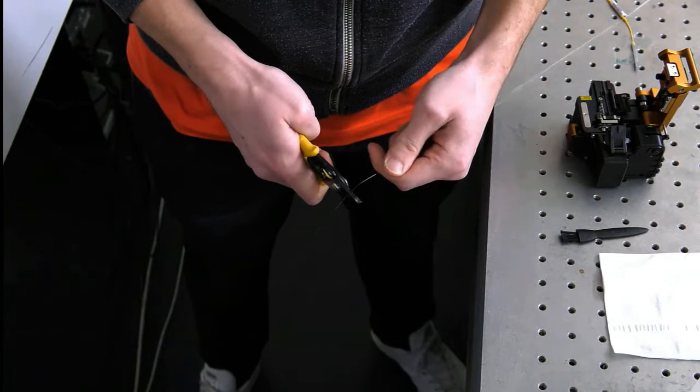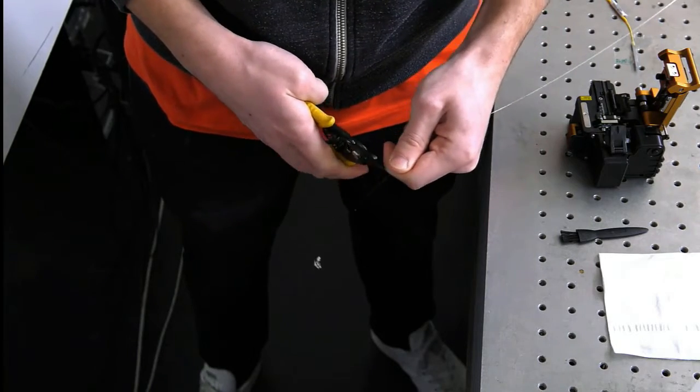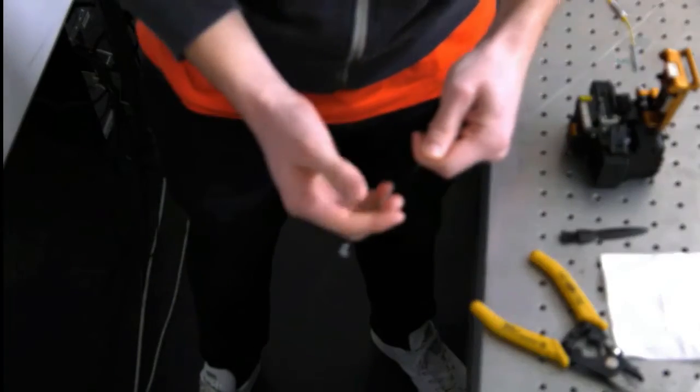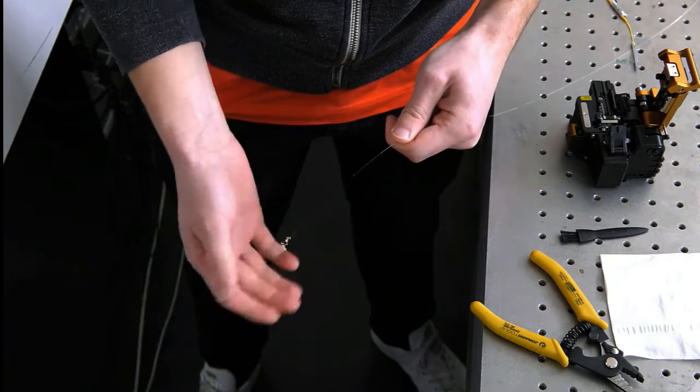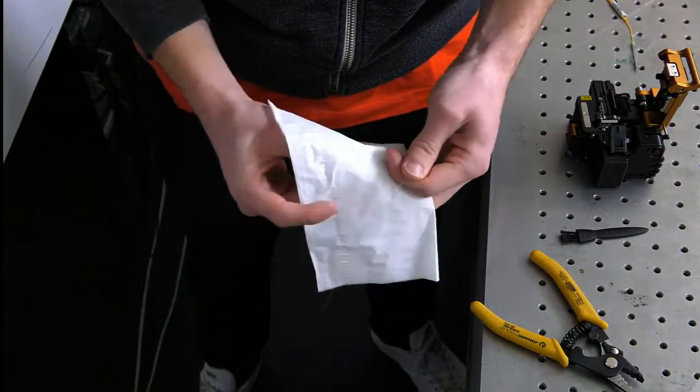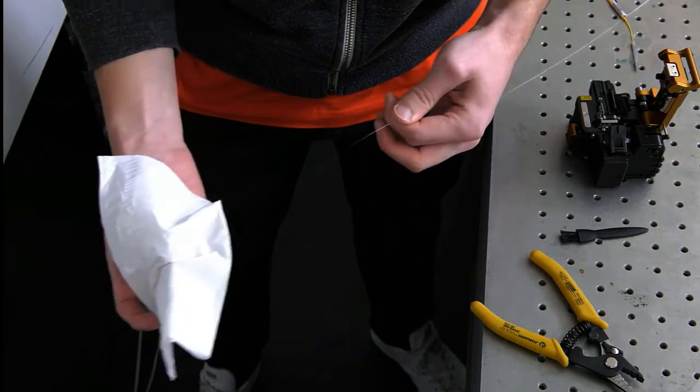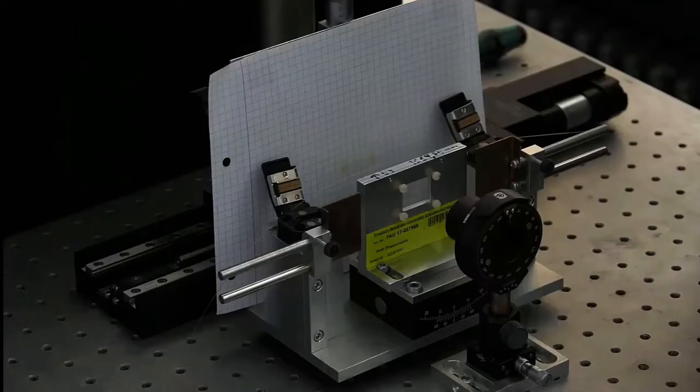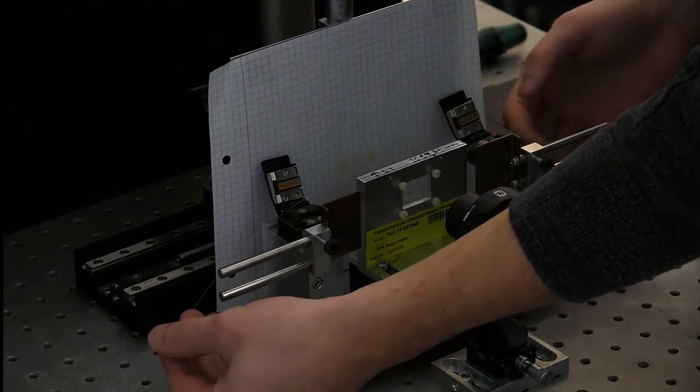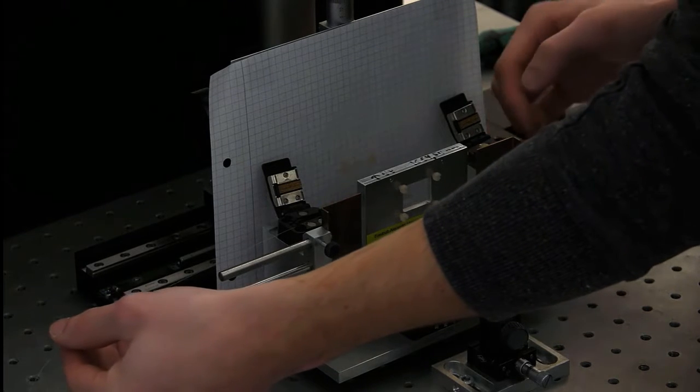Also, we have to remove the protective coating from the part of the fiber, where we want to inscribe the grating, carefully and clean this part with an isopropanol soaked tissue.